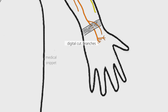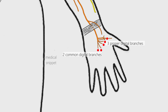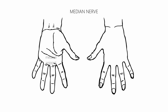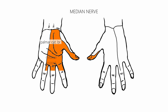Digital cutaneous nerves consist of three proper digital branches and two common digital branches. Two proper digital branches supply the thumb, and another proper digital branch supplies the lateral side of the index finger. This digital branch to index finger also supplies the first lumbrical. The common digital branches supply the second and third interdigital clefts with adjoining index, middle, and lateral half of ring finger. The lateral common digital branch also supplies the second lumbrical. So sensory innervation of median nerve in the hand covers the thenar eminence and central palm, and the palmar surface and fingertips of the lateral three and a half digits.